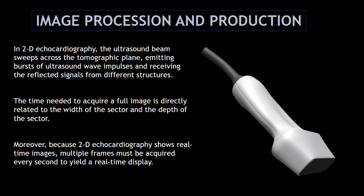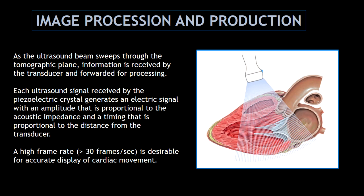How is the image produced? In 2D echocardiography, the ultrasound beam sweeps across the plane, sending ultrasound wave impulses and receiving the reflected signals from different structures. In that sense, 2D echocardiography shows real-time images of the heart. As the ultrasound beam sweeps through the tomographic plane, the information is received by the transducer and forwarded for processing. A high frame rate is desirable for accurate display of cardiac movement.